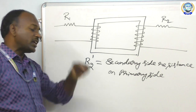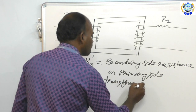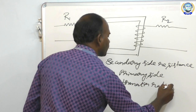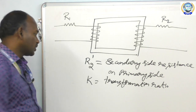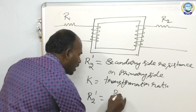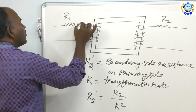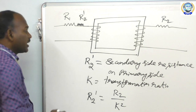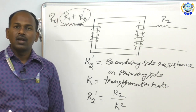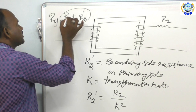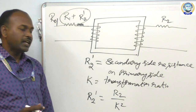By using transformation ratio K, you transform the secondary side resistance to the primary side resistance. R2 dash is equal to R2 divided by K square. You get one more resistance, R2 dash, and combined with R1 these two are called R01. R1 is the already existing resistance and R2 dash is the secondary resistance referred to the primary side.